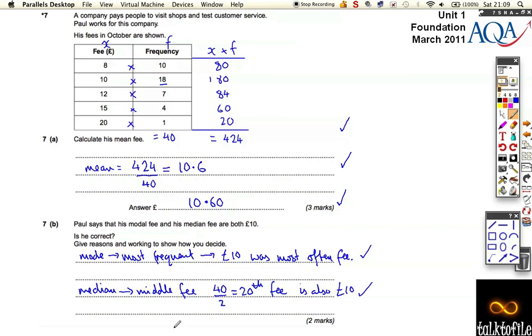So follow these two through again. This page is really important, this question, being able to find the mean, the mode, and the median from a table that looks like this.